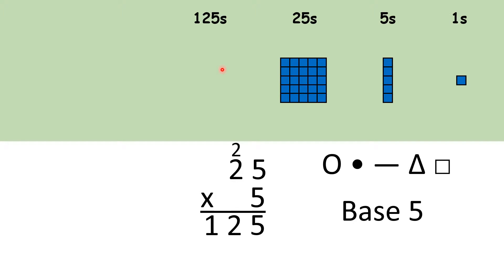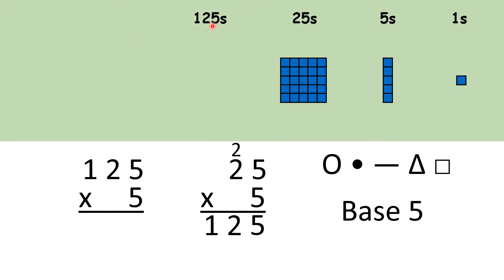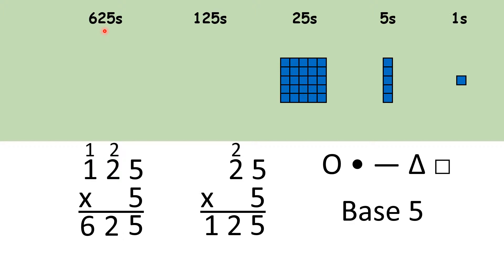So how can we work out what we have next? We need to work out one hundred and twenty-five times five, so that means our next place value represents multiples of six hundred and twenty-five.